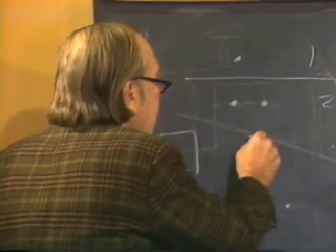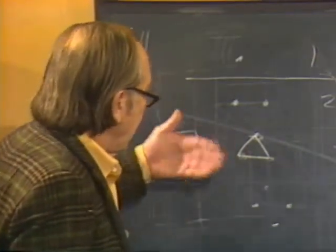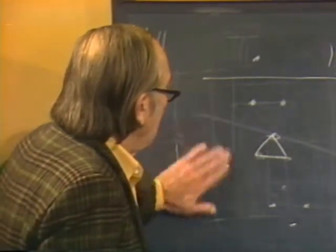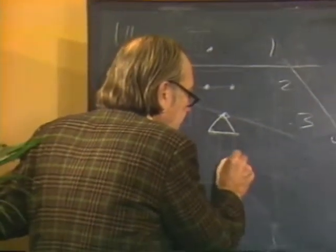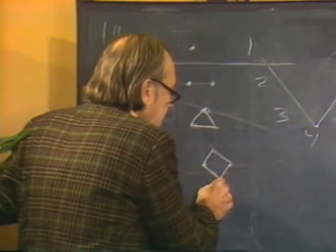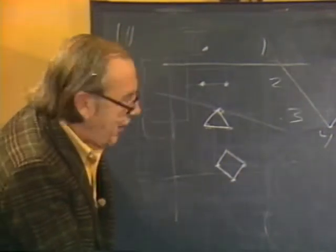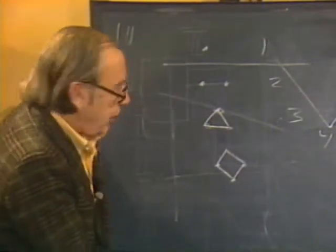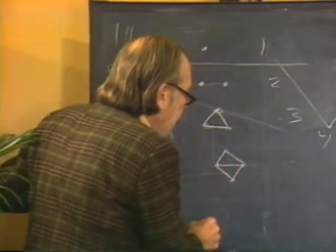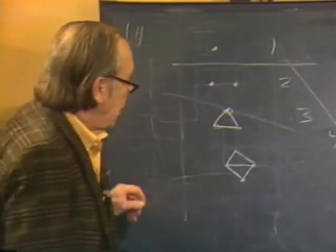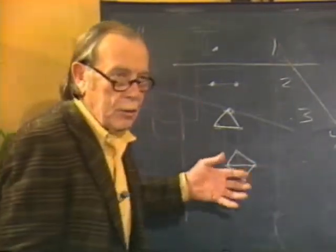Now, if I join the three points, I get a triangle, which is a plane figure, to be sure. But what happens when I join the four points? If I join four points, that's a square. But that's not a complete joining — I'd have to join those two points as well.